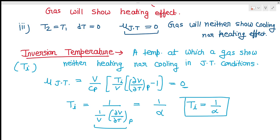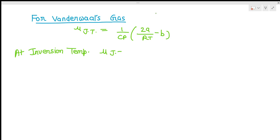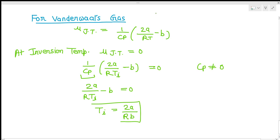For Van der Waals gases, we have seen that mu_JT = (1/Cp) · (2A/RT minus B). At inversion temperature, mu_JT is equal to zero. Since Cp cannot be equal to zero, we can say 2A/RTi minus B equals zero. Therefore, Ti will be equal to 2A/RB. This is the inversion temperature for Van der Waals gases.